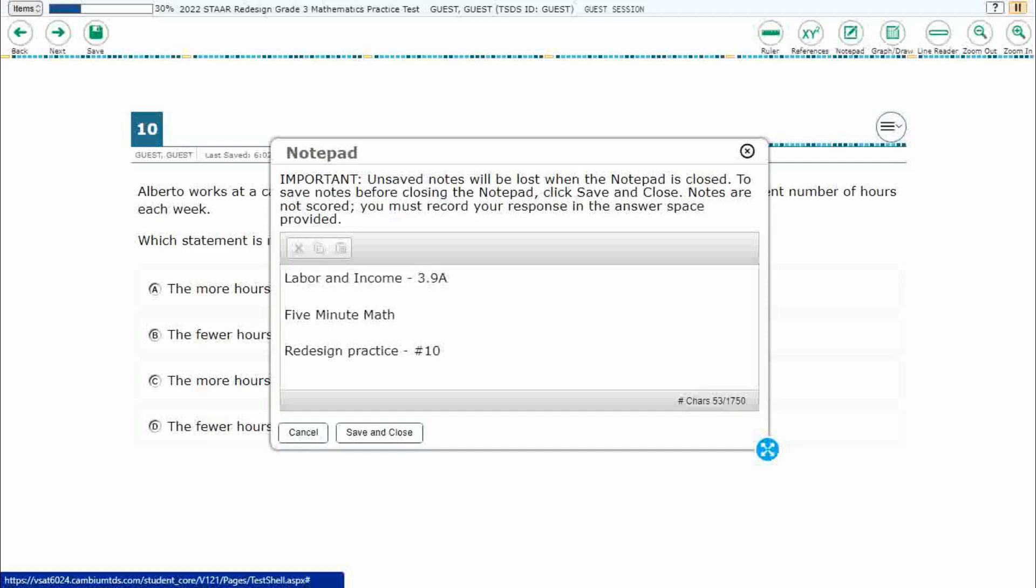Hello and welcome to 5-Minute Math. Today we are looking at the third grade concept of labor and income. This is standard 3.9a in the great state of Texas and we are using item number 10 off the Redesign Practice Online Star Test.